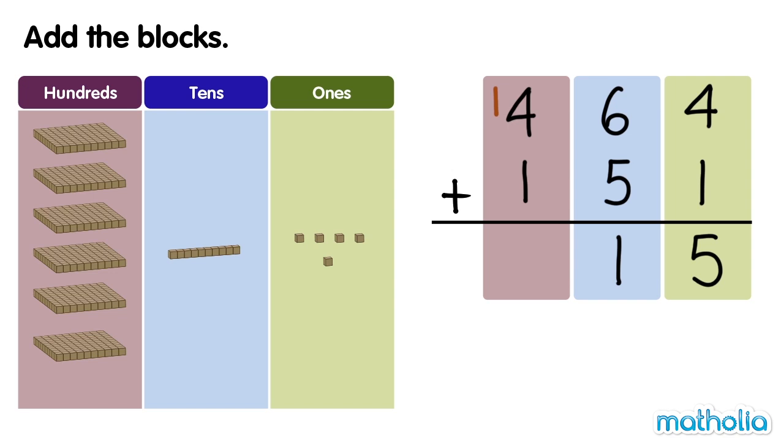Now we add the hundreds. 1 hundred plus 4 hundreds plus 1 hundred is 6 hundreds. There are 615 blocks. 464 plus 151 equals 615.